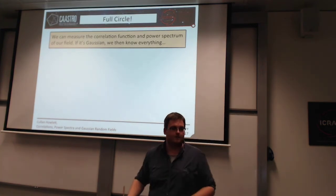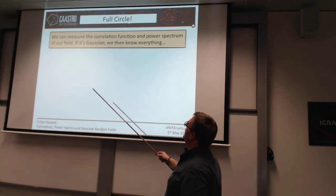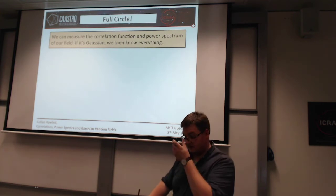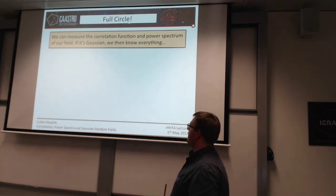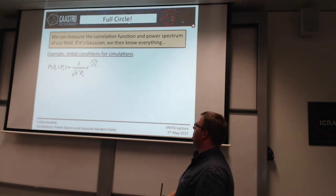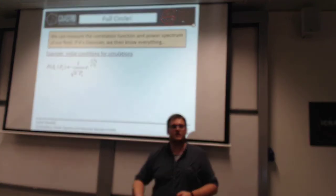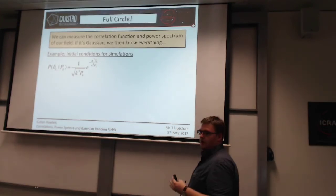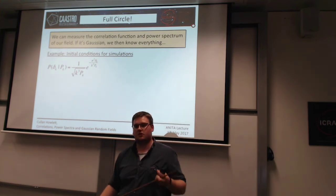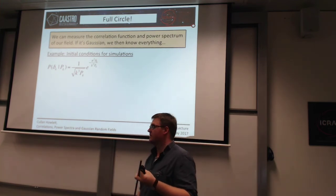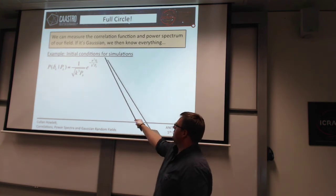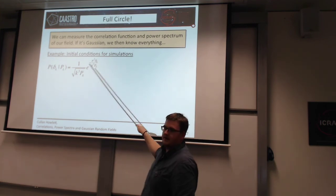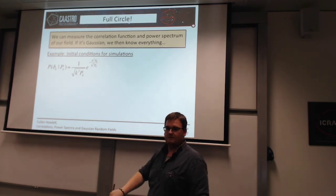So we can go full circle back to the original point: if we can measure the correlation function or power spectrum of our field, and if it's Gaussian, we then know everything about that field. One way to wrap this all together: if we want to generate a Gaussian simulation, we can say — if I know the power spectrum, I now know everything about my field. I can just say this is a Gaussian distribution where my observable is x, my power spectrum is the covariance, and I can generate points from that distribution.